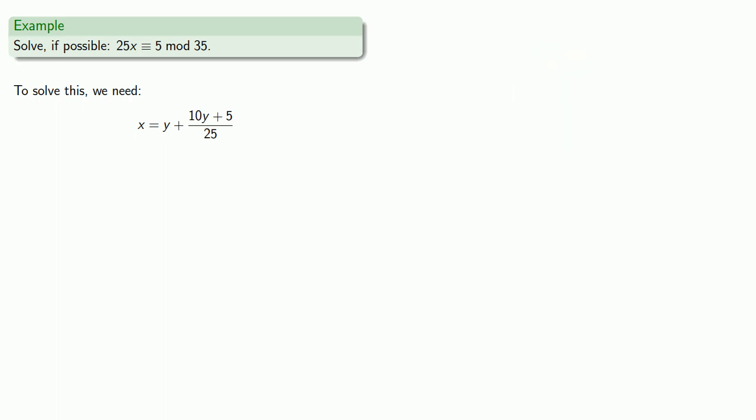Well, we want 10Y plus 5 over 25 to be a whole number, so we'll make that a new variable Z and solve for Y. And again, we'll split our numerator into a part that's divisible by 10 and leftovers. And so Y is equal to 2Z plus 5Z minus 5 over 10.